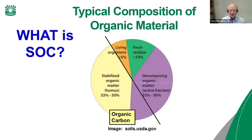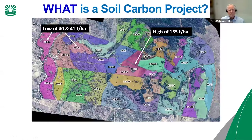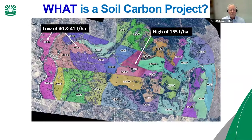This is a soil carbon project on five and a half thousand hectares. All the different colors are strata or carbon estimation areas, and the numbers on the screen are tons of carbon per hectare measured down to a meter. You'll see significant variability across that landscape, from around 40 tons of carbon per hectare to a high of 155 tons of carbon per hectare. It is a grazing property.